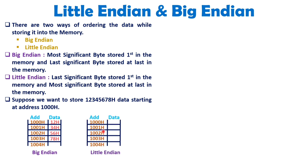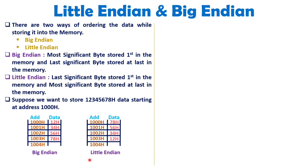With Little Endian architecture, you store the least significant byte first — meaning 78 hex is stored at address 1000 hex first. And at last, you store the most significant byte, that is 12 hex. You can observe that in memory, at one location we can store only one byte. So, with respect to the size of word, how the computer stores it depends on whether the architecture is Big Endian or Little Endian.